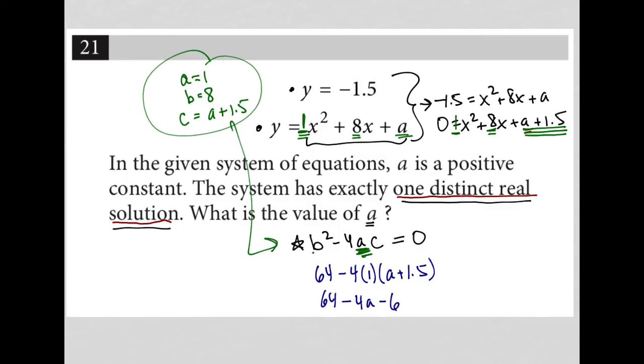Which would give me 64 minus 6, which is 58. So it becomes 58 minus 4a. Again, equals 0, right? So we're trying to recreate this equation here.